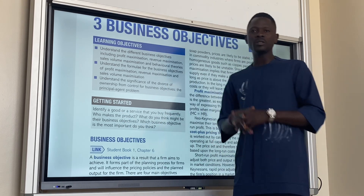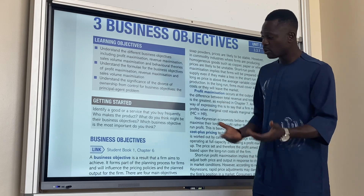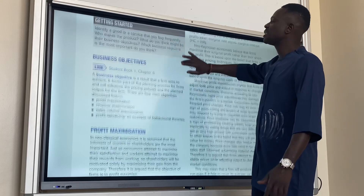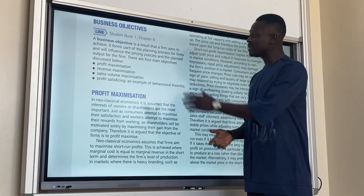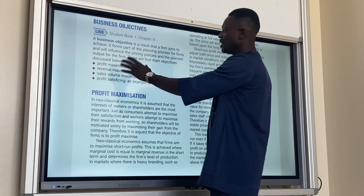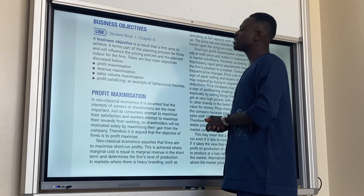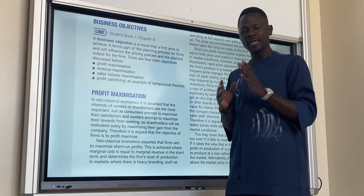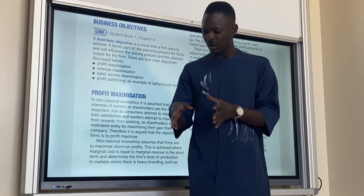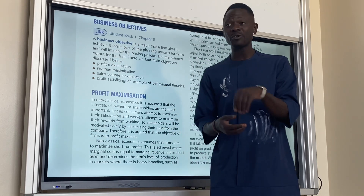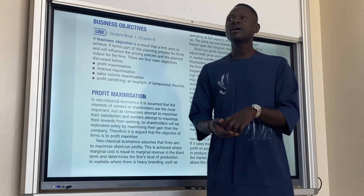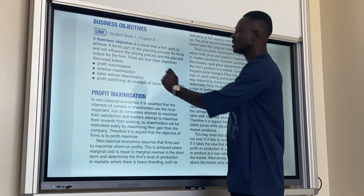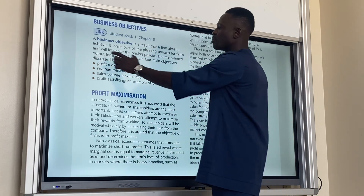Today's focus will be on profit maximization. But first, let's look at what is written about business objectives. A business objective is a result that a firm aims to achieve. It forms part of the planning process for firms and will influence their pricing policies and planned output. So a business objective becomes part of a business plan, part of the pricing strategy, and part of the output that will be produced over a period of time.